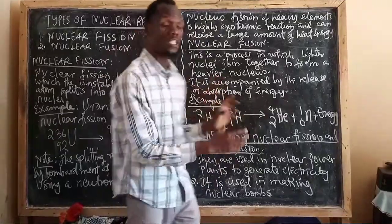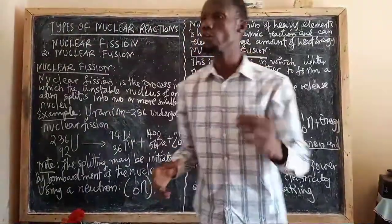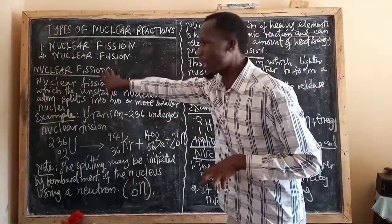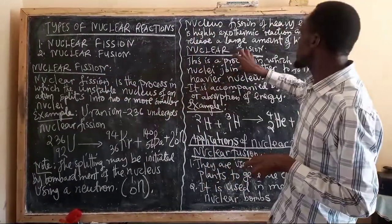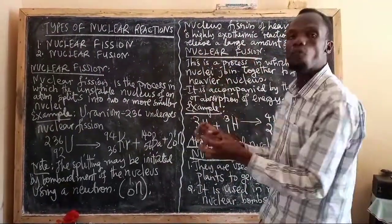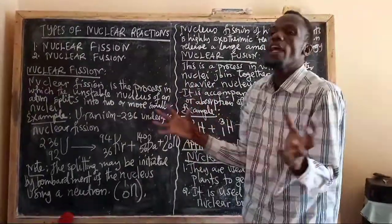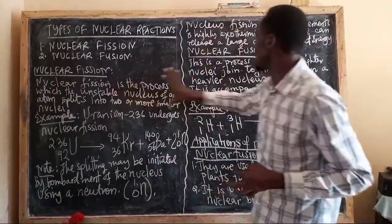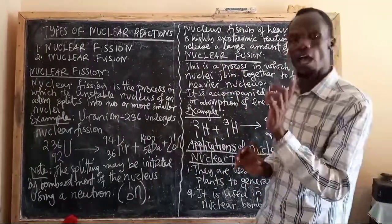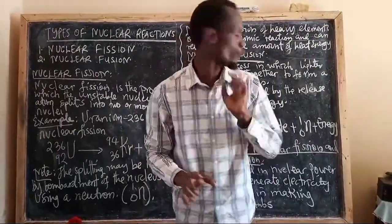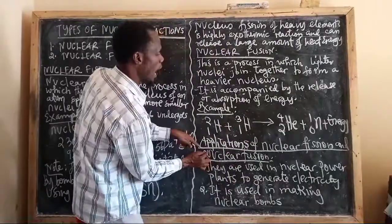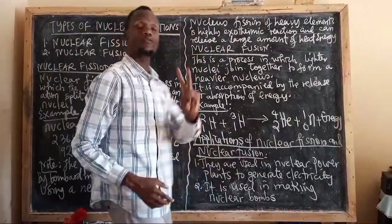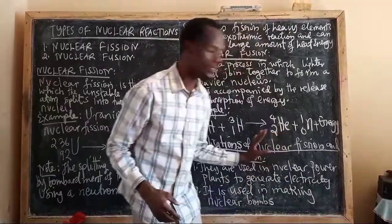After seeing the difference between nuclear fission and nuclear fusion: fission is all about breaking down of the large nucleus into smaller ones, while fusion is joining together of smaller nuclei to form a heavier one. Now we have to see what we call the applications of nuclear fission and nuclear fusion. We have two main applications.